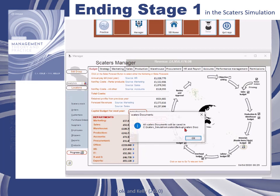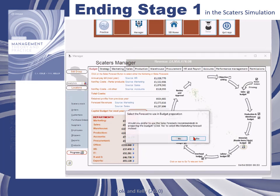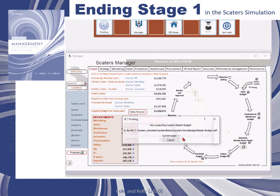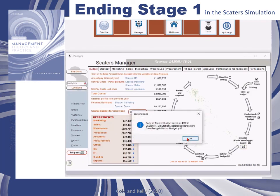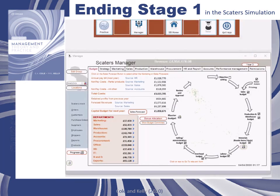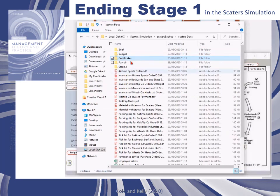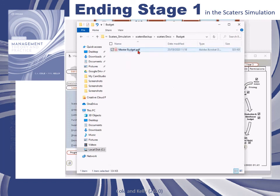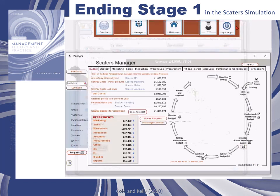When you've done all of those things, you will need to click on the master budget. This will create the master budget for the coming year that will be used by the budget committee to identify any new capital investments, strategic projects, and make decisions about whether to invest in those. The master budget will then appear in the SCATERS docs folder in the budget folder, and you can download, open, and share it with other people on your team or your tutor.